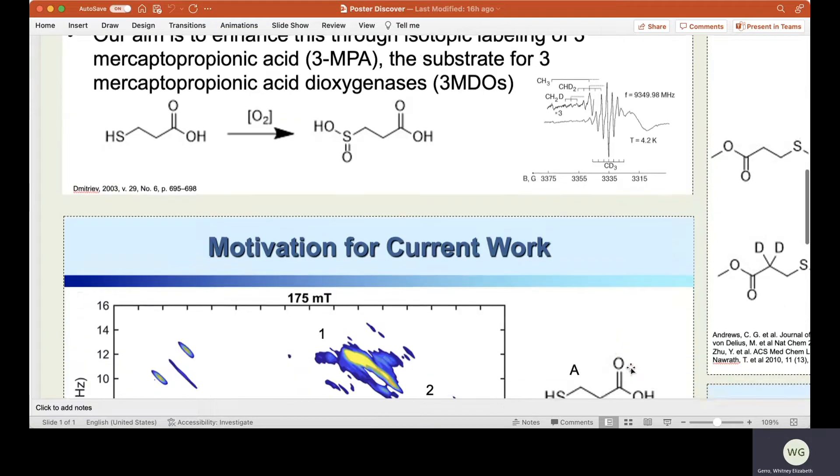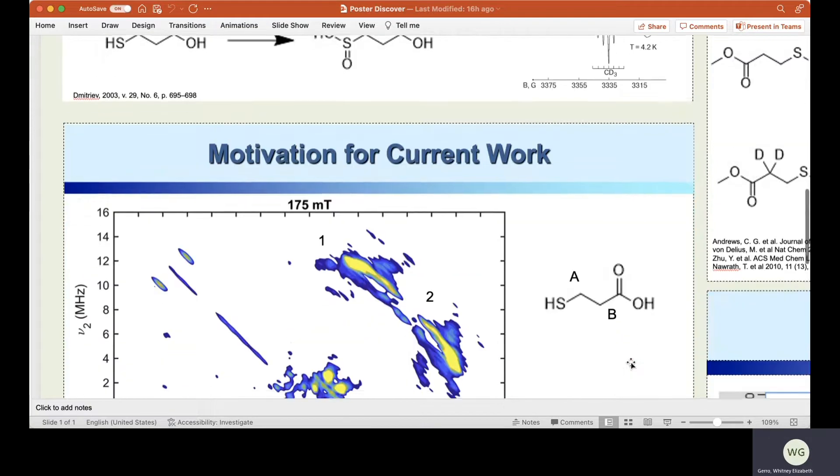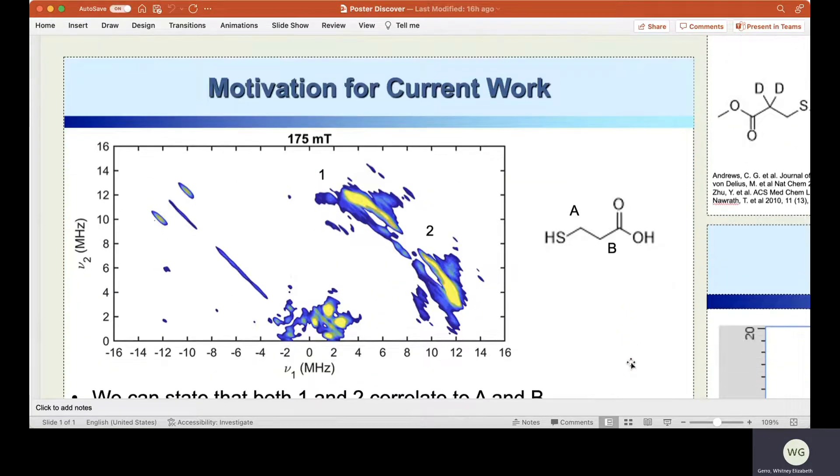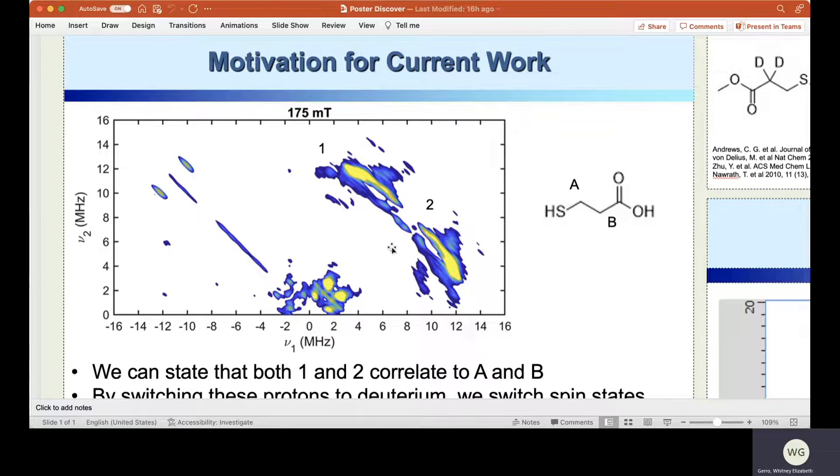Our collaborators at the University of Alabama sent us this high-score EPR spectra. This peanut-esque blob here showing the two spots, which we've labeled 1 and 2, is where we can see splitting as a result of iron in the substrate enzyme complex. The 1 and 2 correspond with carbon A and carbon B on our labeled molecule. The issue, however, is that we are unsure which spot corresponds with A and which spot corresponds with B.